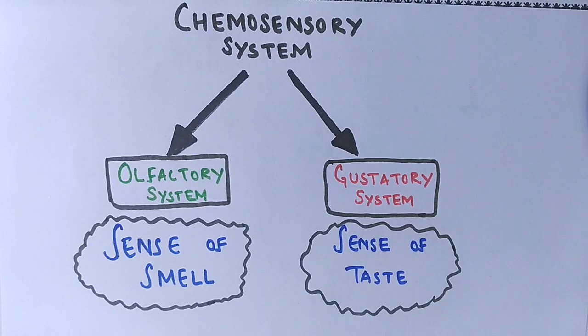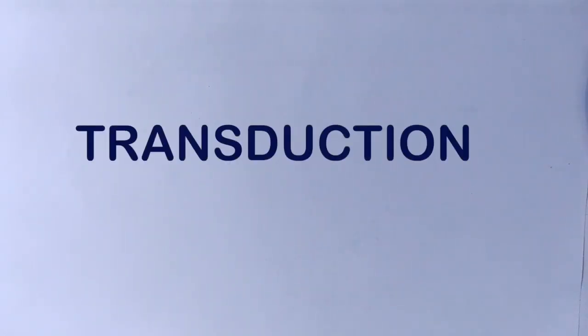It must be noted here that all the working of the chemosensory system is based on a process called transduction. Transduction is a pathway where the physical stimulus is converted into action potentials which the brain can understand. Here, the physical stimulus is chemical or any odor which cannot be perceived by our brain directly unless the transduction pathway comes into play.